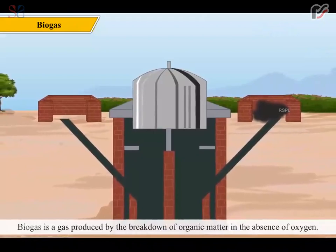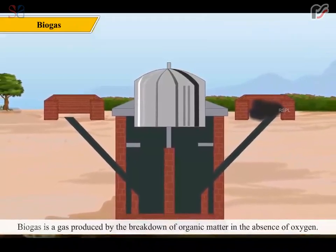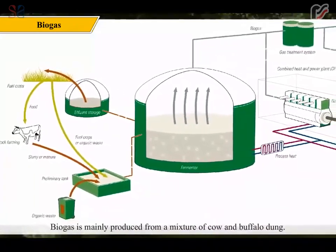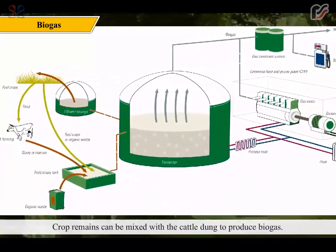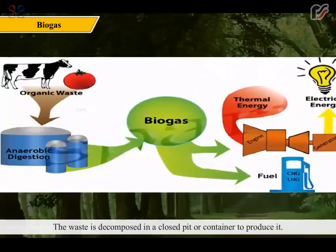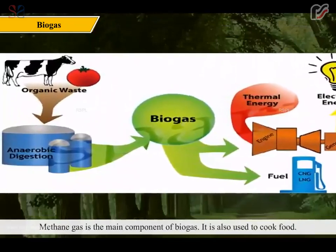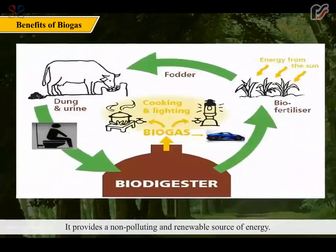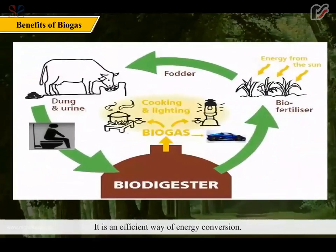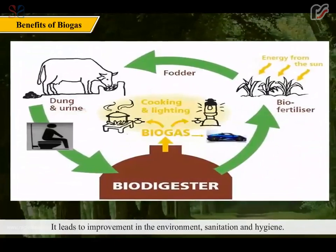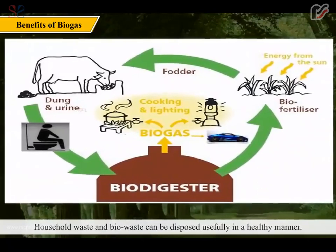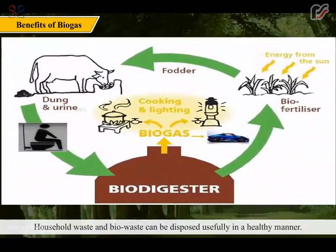Biogas is a gas produced by the breakdown of organic matter in the absence of oxygen. It is a renewable energy source, like solar and wind energy. Biogas is mainly produced from a mixture of cow and buffalo dung; crop remains can also be mixed with cattle dung. The waste is decomposed in a closed pit or container. Methane gas is the main component of biogas. It is used to cook food, provides a non-polluting and renewable source of energy, is an efficient way of energy conversion, improves the environment and sanitation, and is a cheap source of fuel. Household and bio-waste can be disposed of usefully and in a healthy manner.